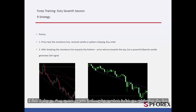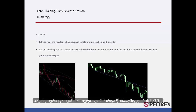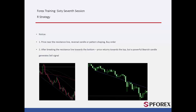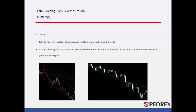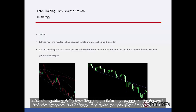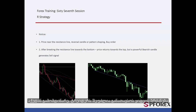After price passes a resistance line and returns towards it, if a powerful bearish candle forms on the resistance line, then a reliable sell signal will be generated. On the right graph, market price passed the resistance line but could not pass it towards the top after the price returned towards it. An engulfing candle formed on this resistance line, so a trader could place a sell order.